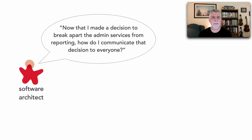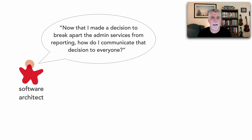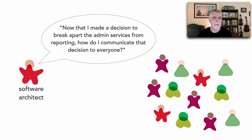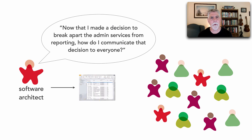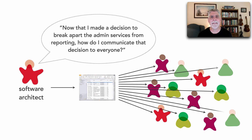Let's say we have a software architect who says, now that I've made a decision to break apart the admin services from reporting, how do I communicate that decision to everyone? What the architect tends to do is say, I'll just email it to everybody, and so they generate an email and send it to the entire group.